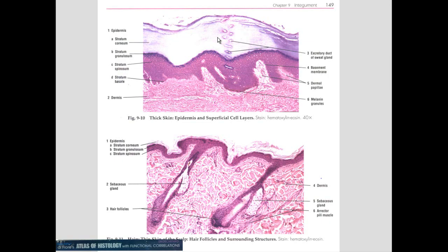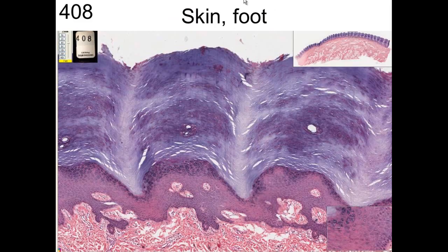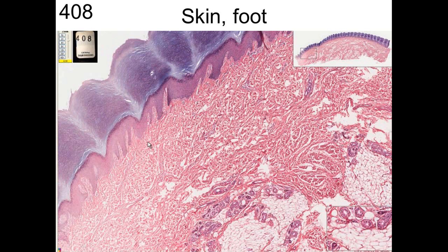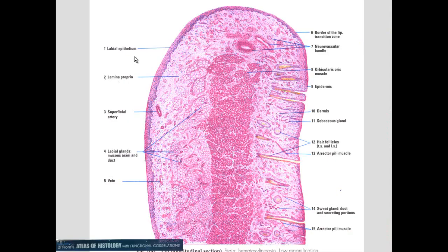Thick skin typically does not have hair — you don't have hair on the bottom of your hands or the soles of your feet. Here is a very thick skin, likely monkey skin, showing a thick stratum corneum all the way through stratum granulosum, stratum spinosum, and stratum basale. We can also see the papillary region, reticular region, sweat glands, and fat cells in this thick skin.